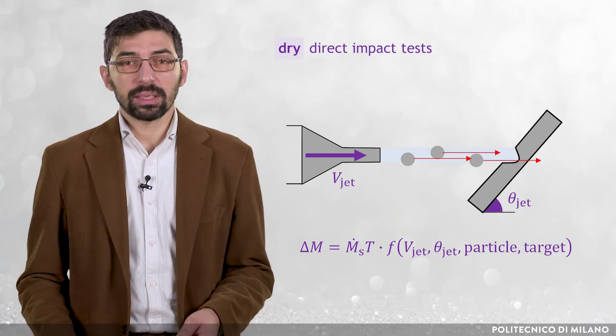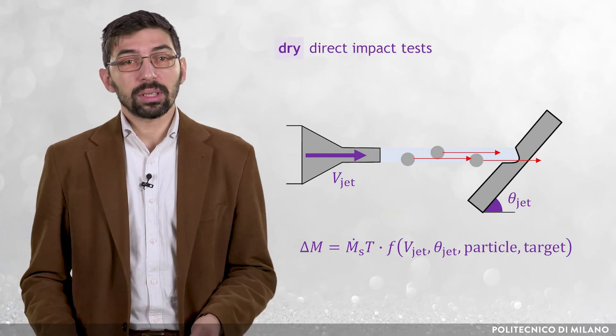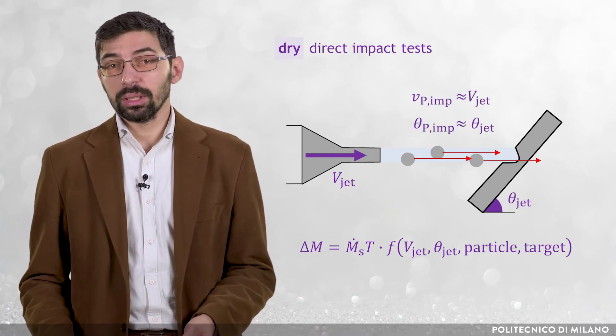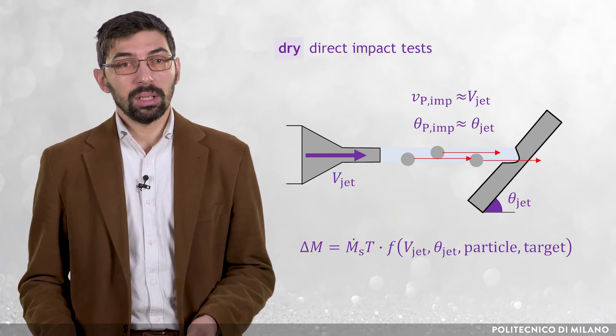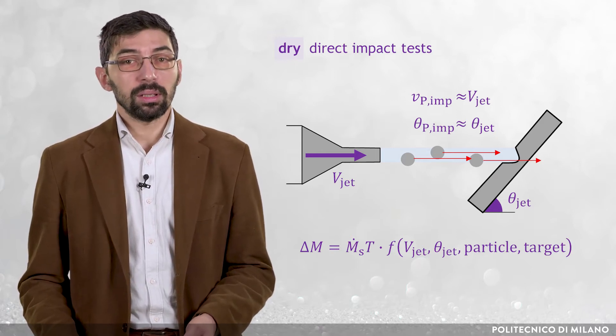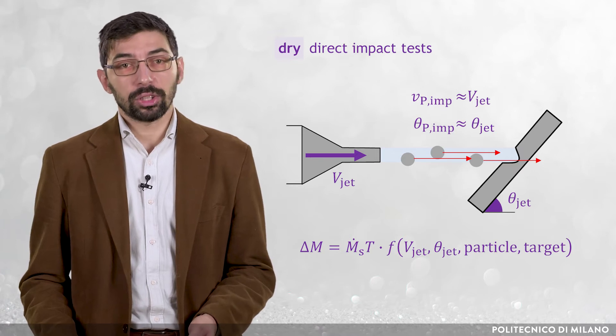This means that, broadly speaking, all particles share the same impact velocity and impact angle, vp-imp and theta p-imp, which are approximately equal to vjet and theta jet, respectively.